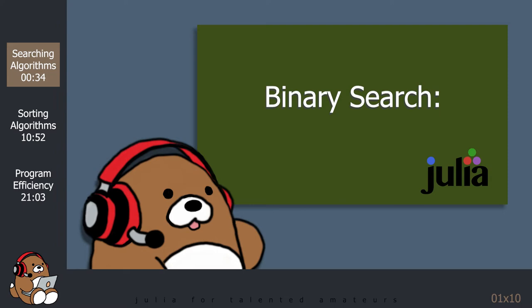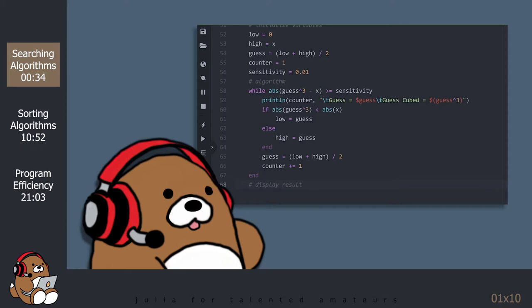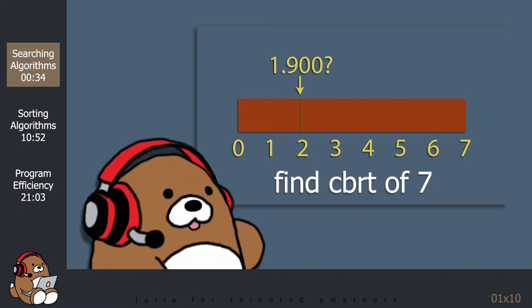The Binary Search Algorithm is more sophisticated. We saw an example of the Binary Search Algorithm in action last week, when we created a function using the Binary Search Algorithm to find the cube root of a number. As a reminder, the Binary Search Algorithm doesn't check every item in the collection. Instead, it splits the collection into two even groups and determines if the desired item is in Group 1 or Group 2. If it's in Group 1, then the algorithm discards Group 2, and if it's in Group 2, then it discards Group 1. The Binary Search Algorithm repeats this process until the desired item is located.